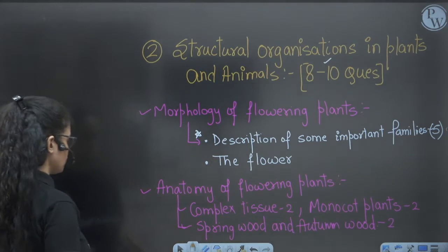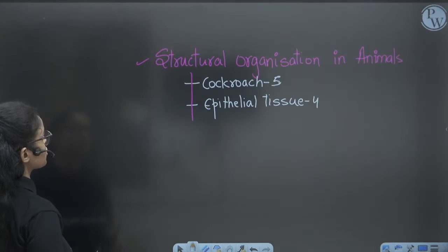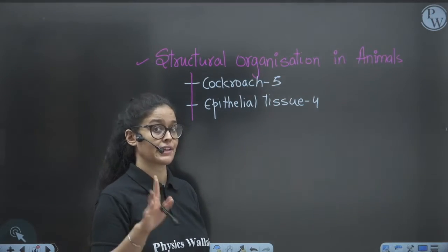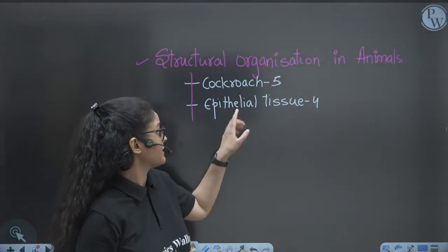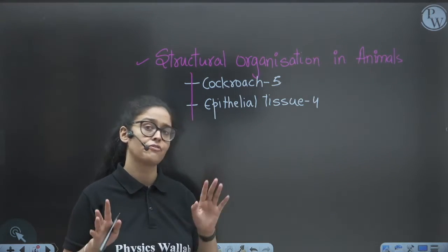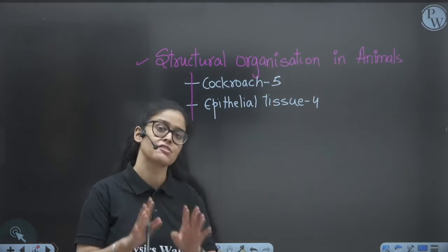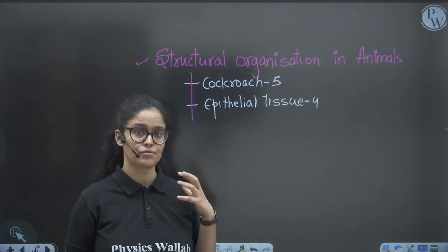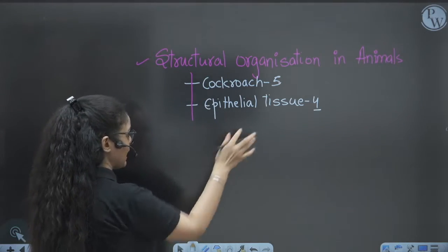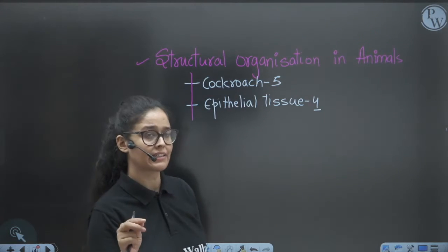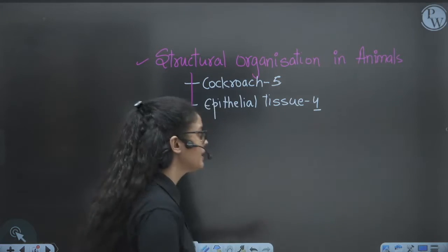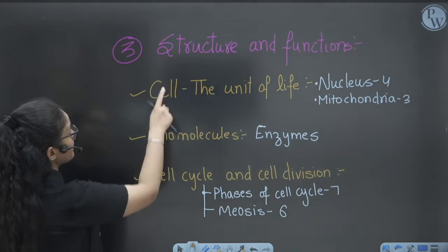In Structural Organization in Animals, five questions have been asked from Cockroach — a very important topic. Epithelial tissue is asked every year; even in the past ten years they ask a lot of questions from it. In the past five years, four questions from epithelial tissue and one to two questions from connective tissue.